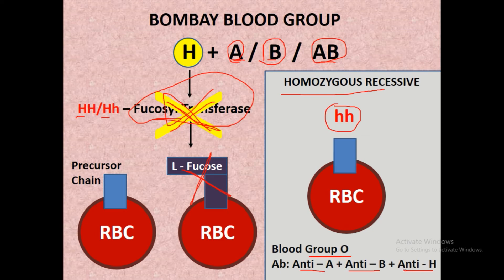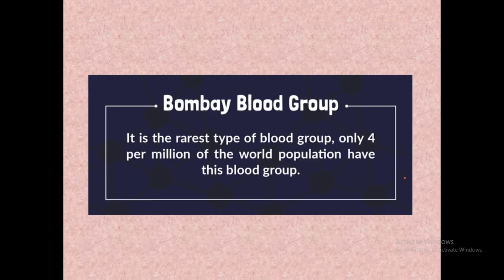Because H substance is absent on the surface of RBC, the person with Bombay blood group has a blood group that is typically O, but with three types of antibodies: antibody A, antibody B, and antibody against H substance. This is the rarest type of blood group — only four per million of the world population have this blood group.